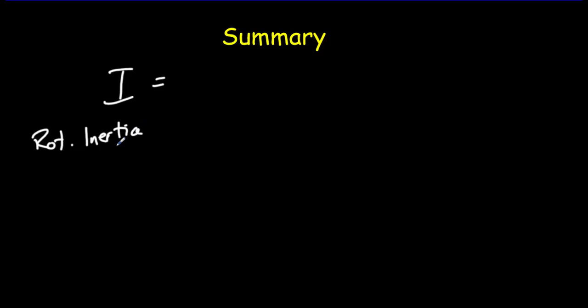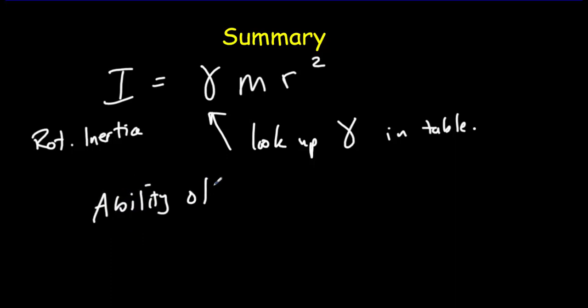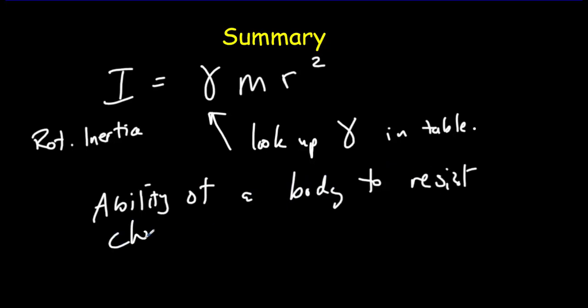To summarize: I, the rotational inertia — also called the moment of inertia — depends on the mass of the body and the way in which that mass is distributed, particularly how far the mass is from the rotational axis. In the equation, that's represented as a coefficient times a characteristic length squared. Rotational inertia plays the role of inertia for rotating bodies: it's the ability of a body to resist changes in rotational motion. And that's all for today — thank you very much.